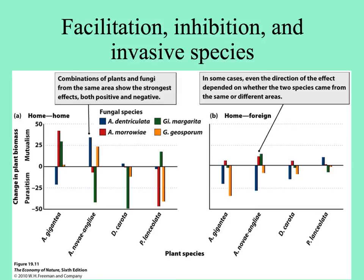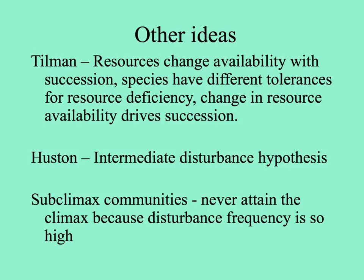In the first graph, certain plants do much better when they're with certain fungi. Above the line are mutualistic interactions promoting plant growth; below the line, parasitism makes plants grow less. In the right-hand graph, you can see that if two species came from the same area, the benefits and losses were much greater than when partners were not co-evolved.